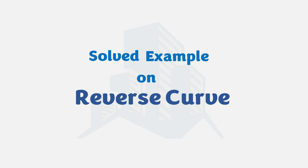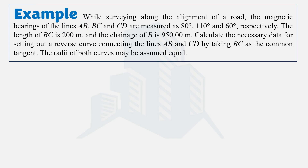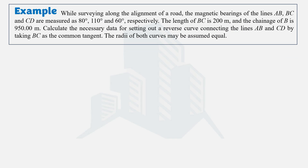Welcome everyone. In this video we are going to solve an example related to the reverse curve. We have been given three different lines with their bearings, the length of one line, and the chainage at one point. We have been asked to calculate all the necessary data for setting out a reverse curve that connects all these lines, given that the radii of both curves are equal.